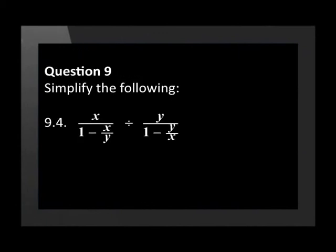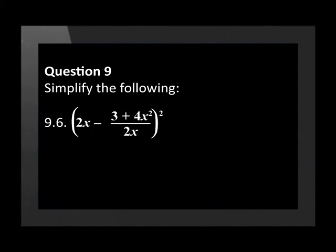9.4 is x divided by 1 minus x over y plus y divided by 1 minus y over x. 9.5 is 3x minus x cubed minus 2 over 4x squared plus 1 over 12x open brackets 2x minus 3 plus 4x squared divided by 2x close brackets to the power of 2. 9.6 is open brackets 2 minus x close brackets to the power of 2 over x cubed minus 8.